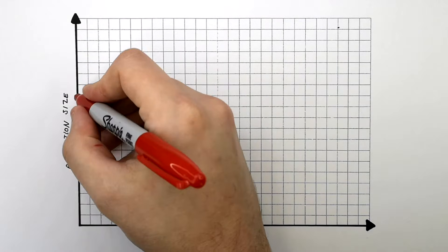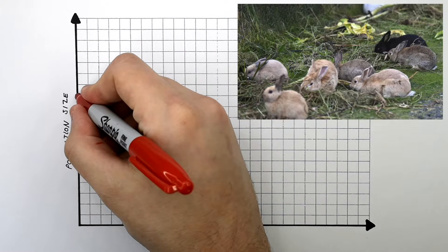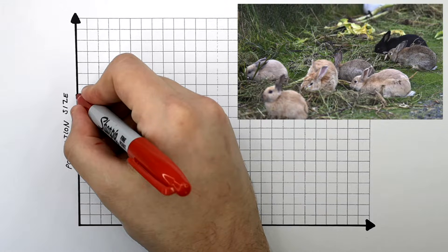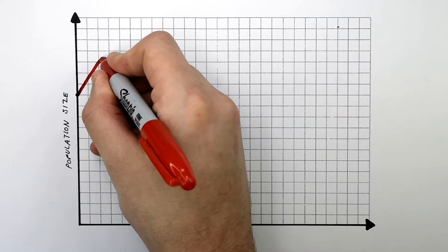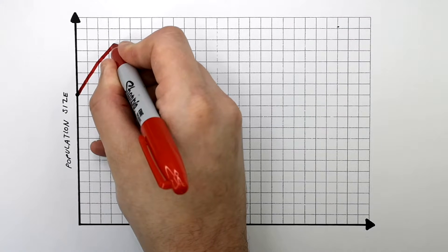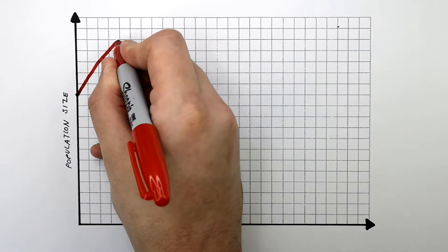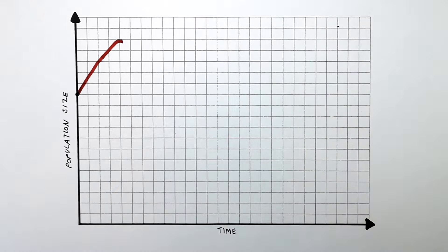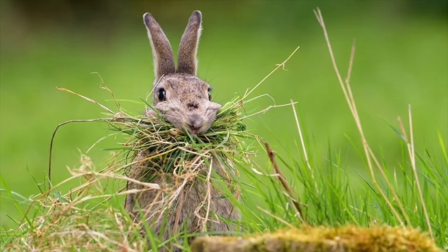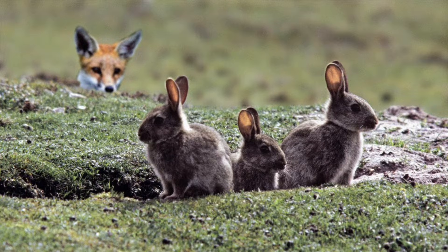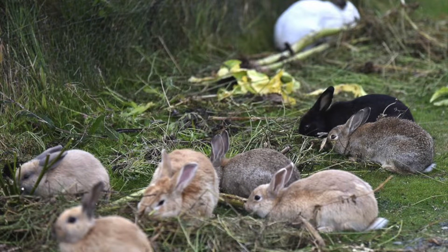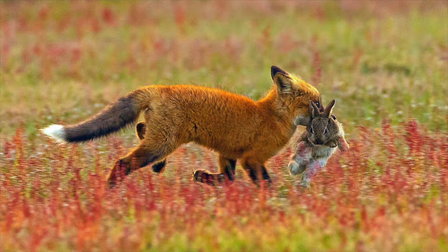The red line represents the prey — in this case, the population size of the rabbits. The population size of the rabbits will only rise if conditions are favourable: if there is enough food, enough mates so they can breed, and if they're not being hunted. There needs to be more rabbits being born than there are rabbits dying.